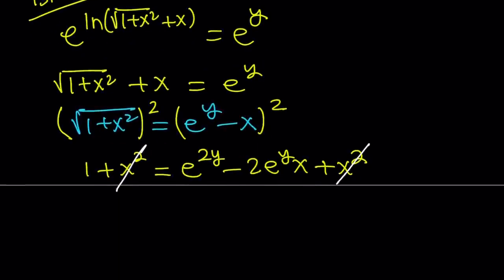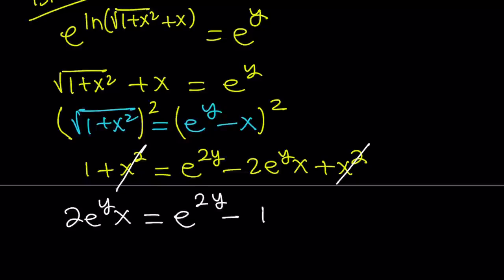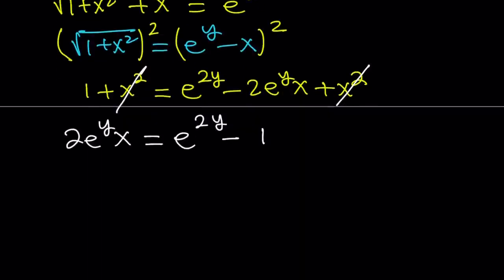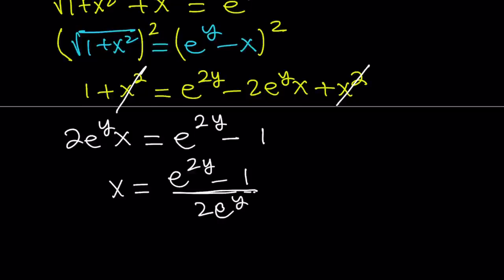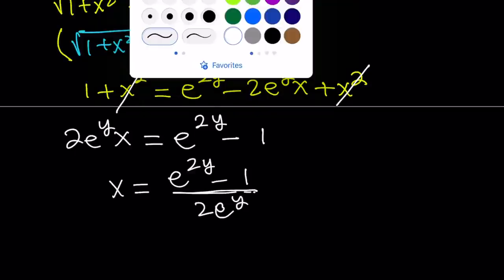So let's go ahead and put that on the left-hand side so it becomes positive. Then bring the 1 over to the right by subtracting 1 from both sides. Now our goal is to solve for x, so let's divide both sides by 2 times e to the power y. So x becomes e to the power 2y minus 1 divided by 2 e to the power y. So we were able to solve for x, and obviously x is in terms of y. That brings us to the end of the first method.